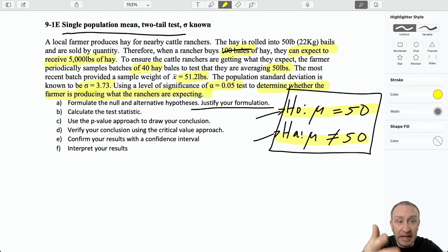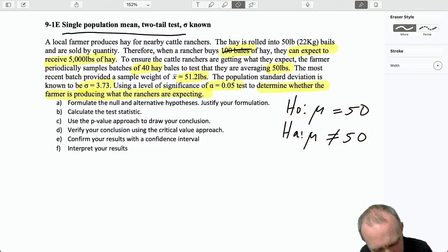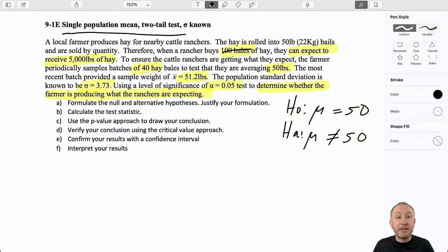So I would say, if our evidence supports the null hypothesis, we have no reason to believe that the rancher's expectations aren't being met. If the evidence supports the alternative hypothesis, well, now we have a problem because now we have evidence to show that the ranchers who are expecting the bale of hay to be 50 pounds, those expectations are not being met because our evidence shows that the average weight is not 50 pounds. So that gives me an explanation, I hope a plain explanation of both the null and the alternative hypotheses.